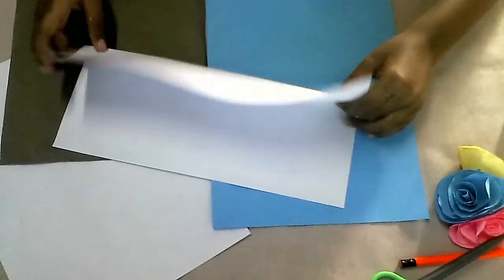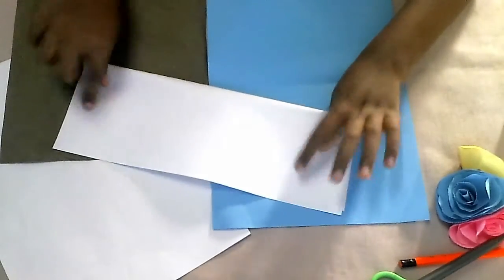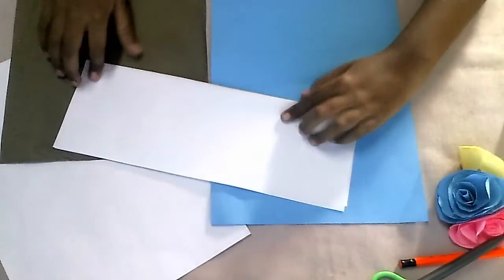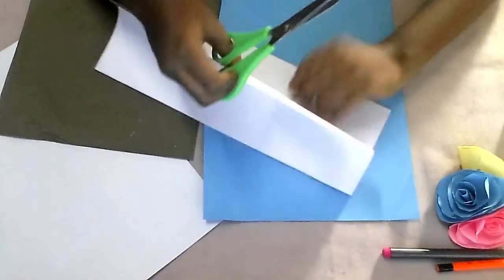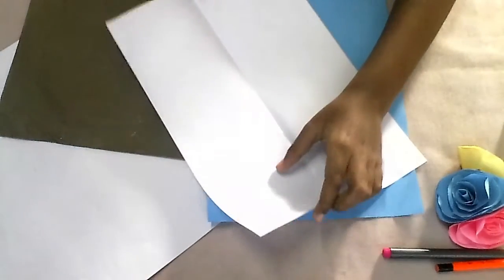I am going to fold the white paper in two. I take one white paper and fold it in two like this. Now I open it and I am cutting the middle.